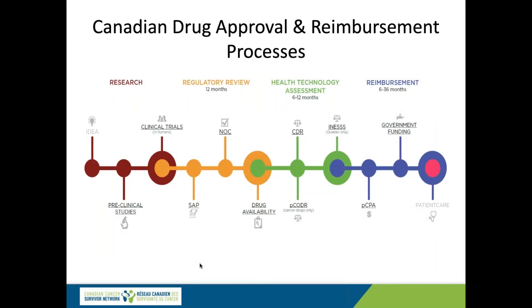This is the overall drug approval and reimbursement or listing process in Canada — a series of processes, not just one. It's important to recognize the various roles here. The federal government approves medications for sale, regulates their use, issues patents, regulates prices, monitors R&D levels by the pharmaceutical industry, administers the special access program, and is one of the single largest purchasers of drugs.